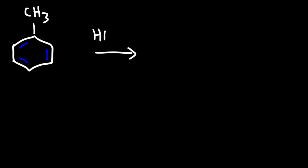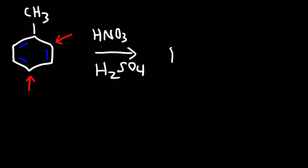What products will we get if we mix toluene with nitric acid and sulfuric acid? Here's toluene - it's basically a benzene ring with a methyl group. This reaction is the nitration of toluene. The methyl group is a weakly activating group and also an ortho-para director, so it's going to direct the incoming NO2 group either to the ortho position or to the para position.